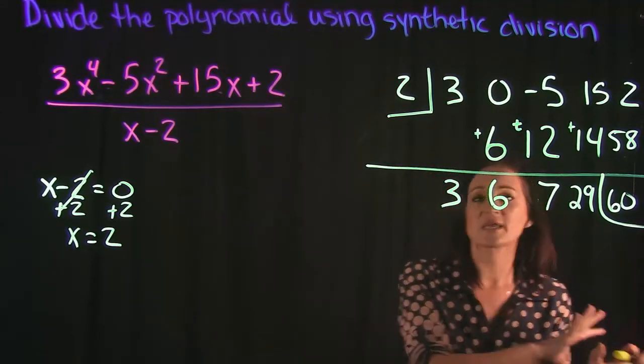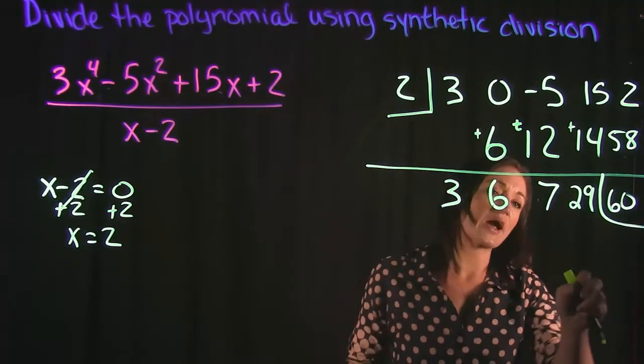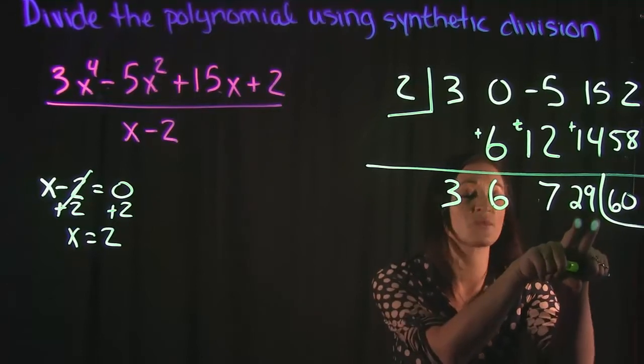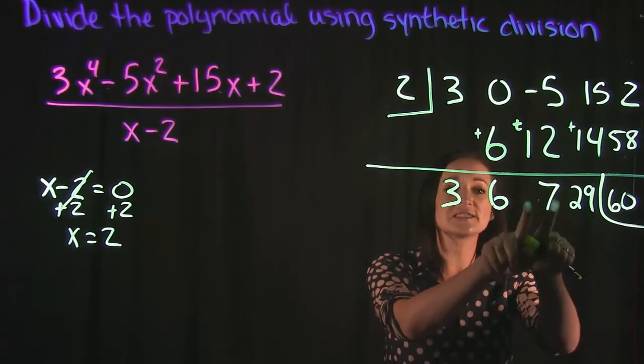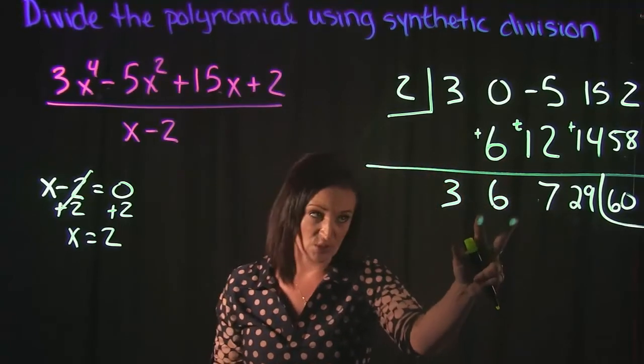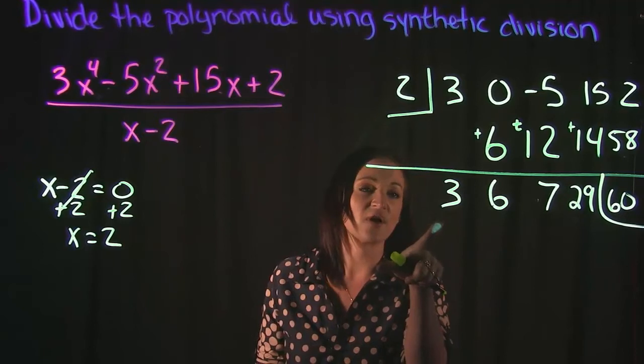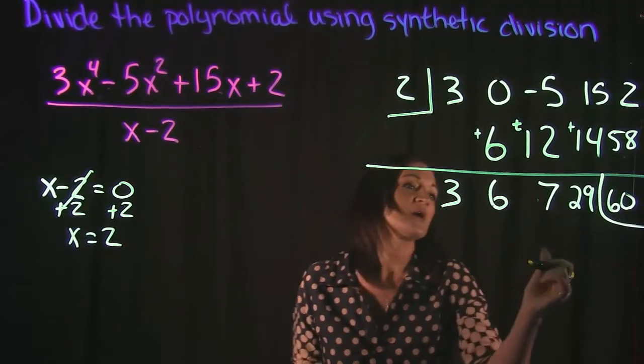So whenever we write our quotient, remember that we write it kind of from right to left, because we need to understand that going from right to left, this 29 represents our constant. 7 is the coefficient of our x to the first power. 6 is the coefficient of our x to the second power. 3 is the coefficient of our x to the third power.